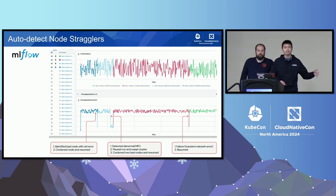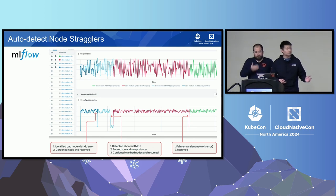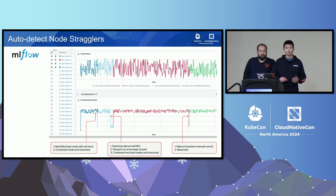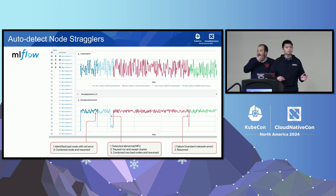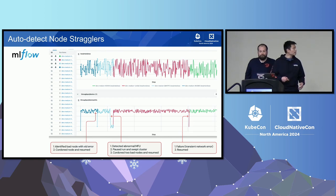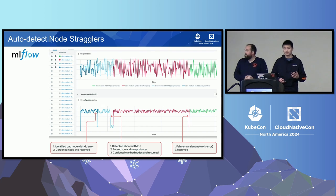This is an example of the impact we saw on the MLflow dashboard — an open-source project used by researchers and engineers for dashboarding experiment results. For a specific run, the first MFU drop in blue was correlated with XID errors, and the platform quickly cordoned the node and resumed the run without a sweep. In the second drop, there was a more prolonged MFU drop with no correlated metrics, so a diagnostic sweep had to happen. We did not determine the root cause, but we were able to cordon the nodes and resume the run without interference. In the last case, the diagnostic sweep ran but found no abnormal MFU, so we did not over-cordon nodes — over-cordoning being a separate problem where false positives lead to even more GPU scarcity.